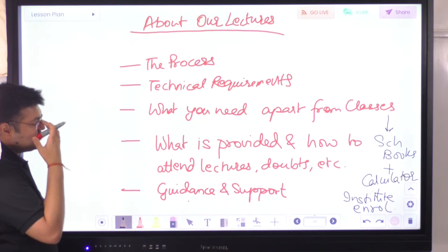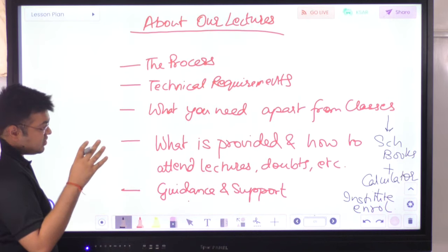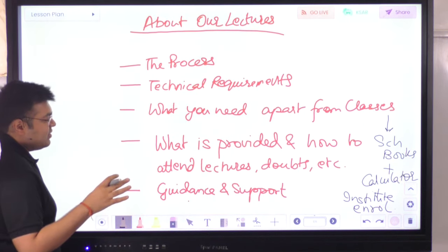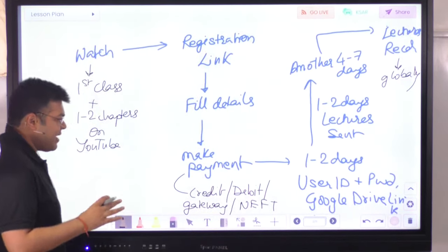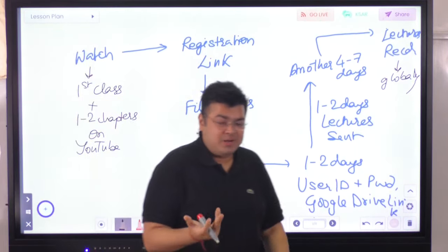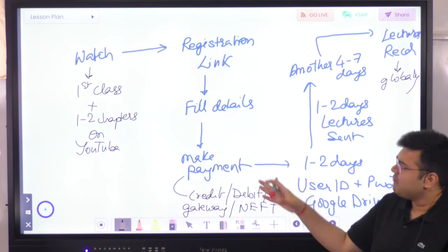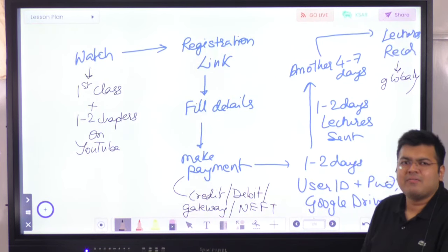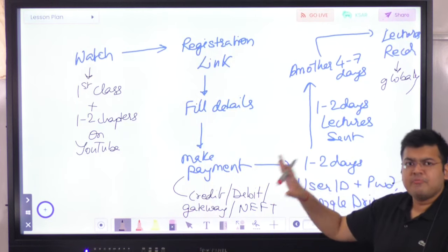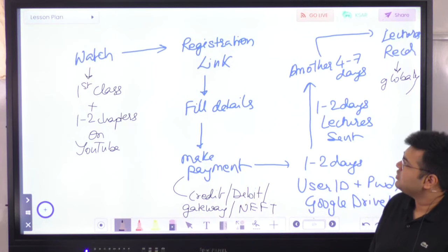Everything else will be taken care of at our end. What's included in your pen drive, how lectures are delivered, and how doubts are managed — we'll look at all of that. To start, you can watch this lecture — it's your first class. A couple of chapters for almost all levels have been uploaded on YouTube. For CFA Level 1 and FRM Level 1, more than three or four chapters are uploaded, so you can go through those first before registering.